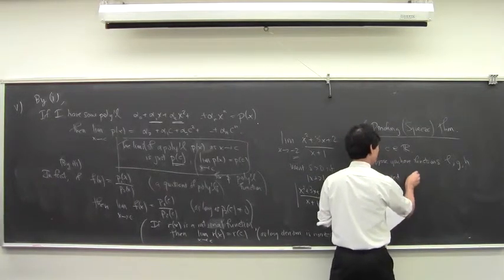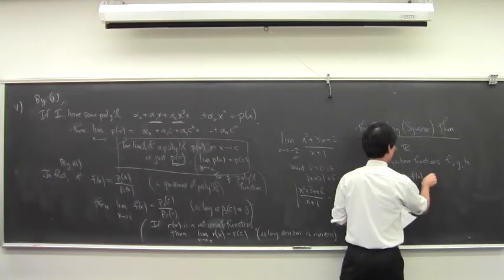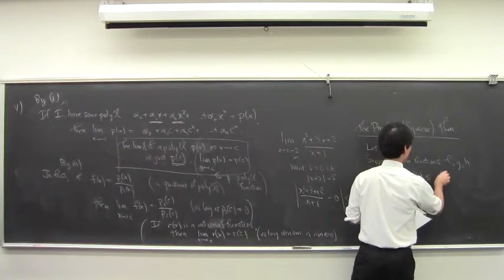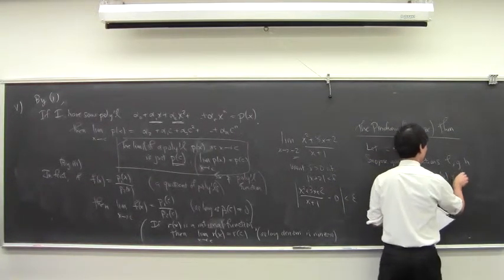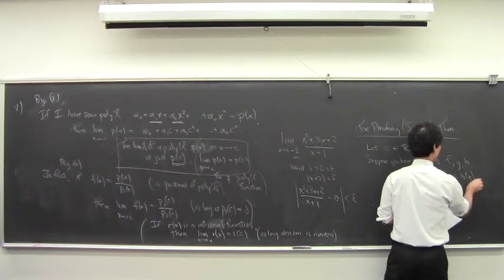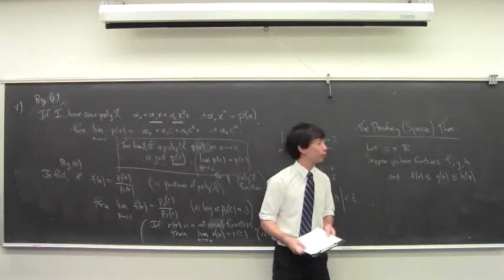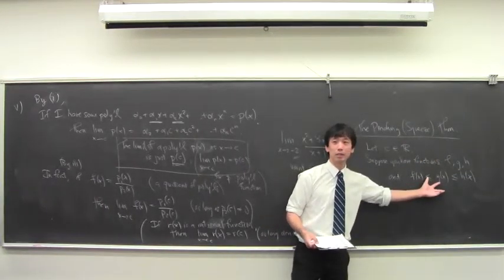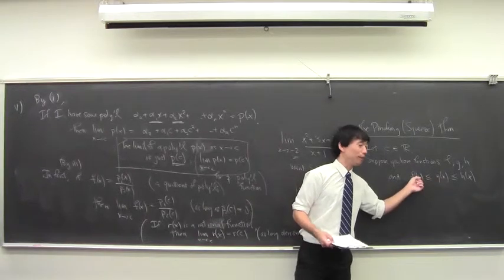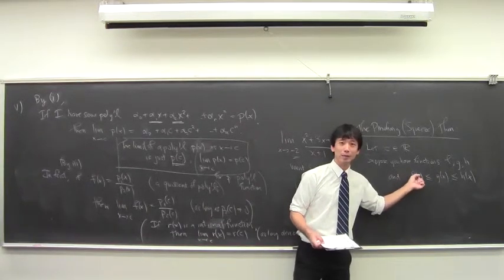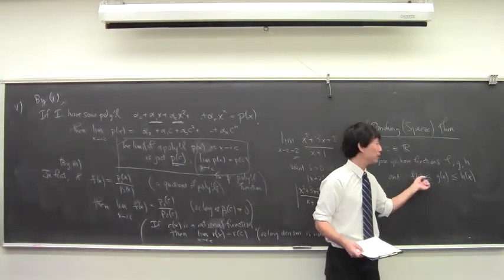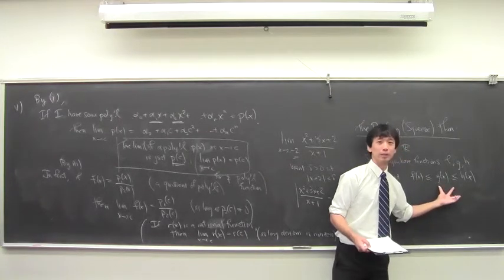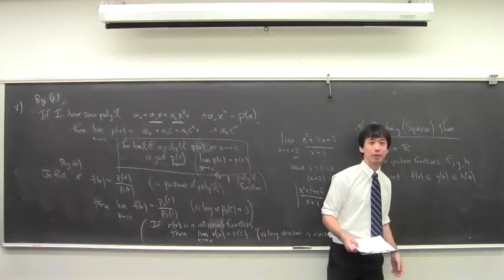You have that f(x) is always less than or equal to g(x), and g(x) is always less than or equal to h(x). So there's some ordering between these three functions — f always has the least value, h always has the greatest, and they always fall into this order.